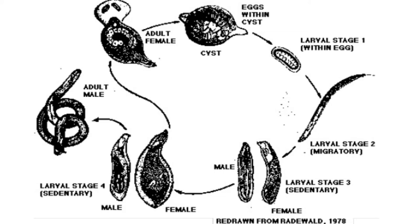When the female dies, her body wall thickens and is transformed into a leathery, brownish-red, lemon-shaped cyst, completing the life cycle. The life cycle normally takes four to six weeks depending on soil temperature. Sugar beet cyst nematode reproduces optimally between 70 to 80 degrees Fahrenheit and is capable of producing three cycles in a season. While it currently causes economic loss only in sugar beet, it can infect more than 200 plant species in 23 different families.